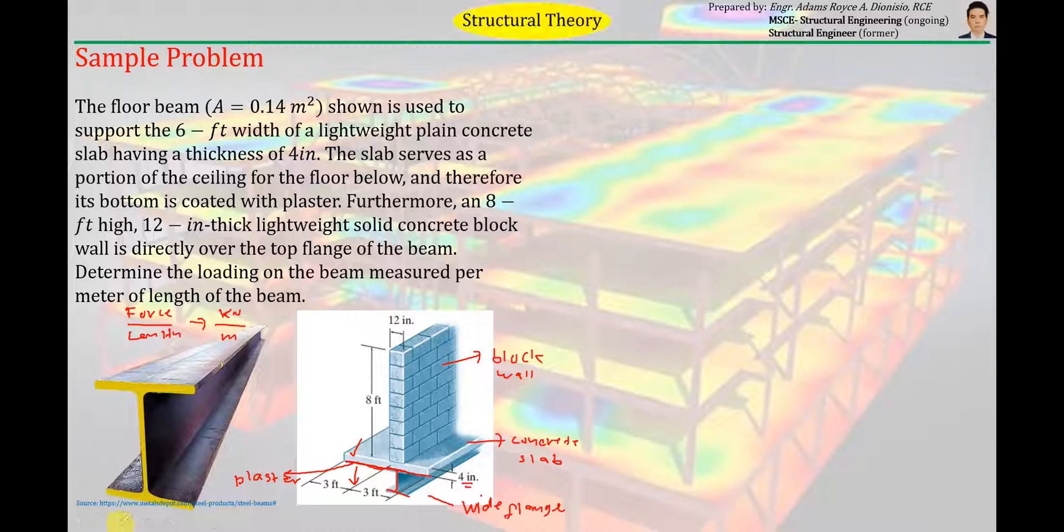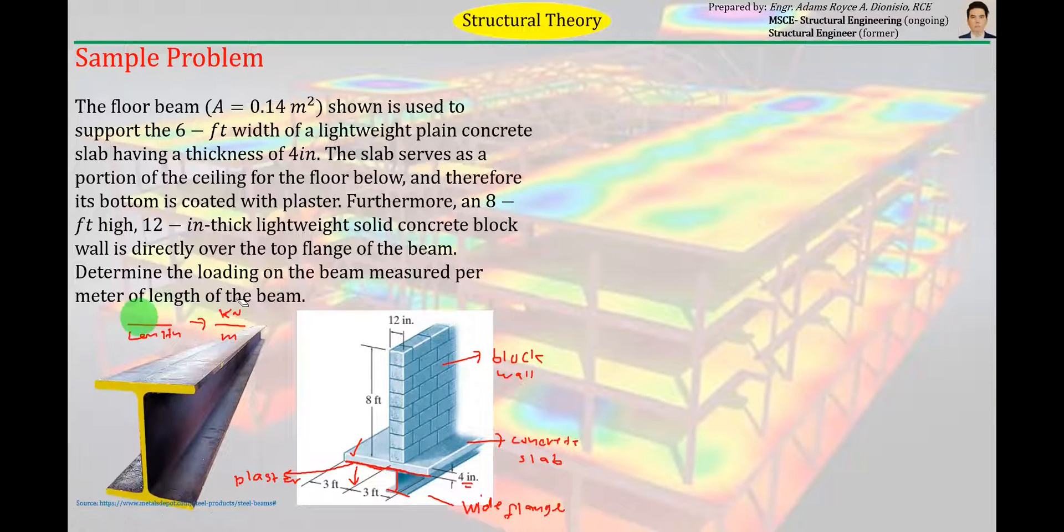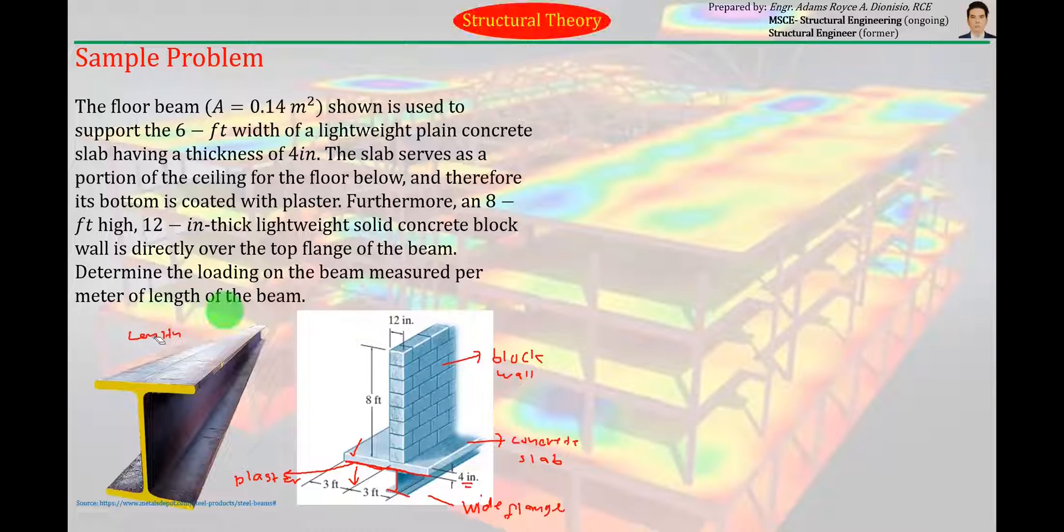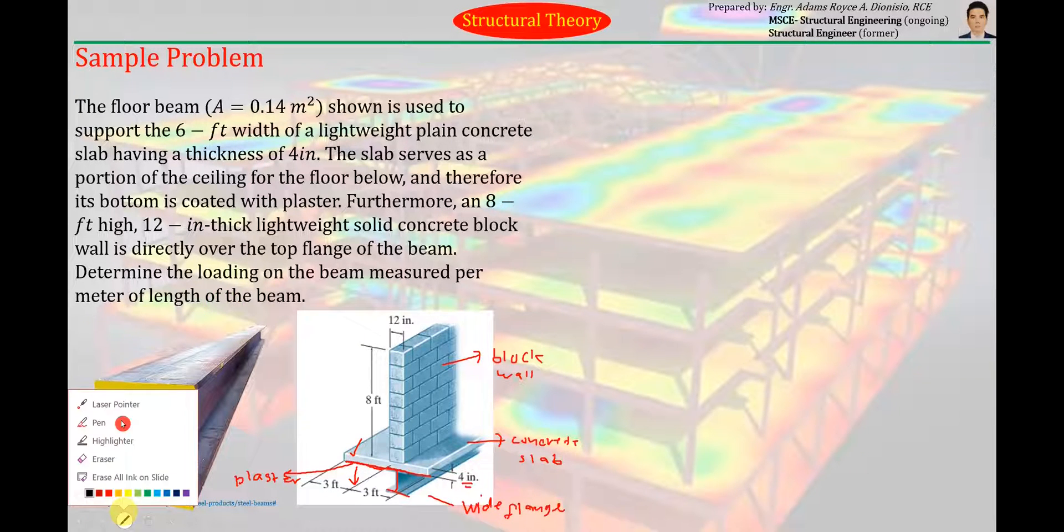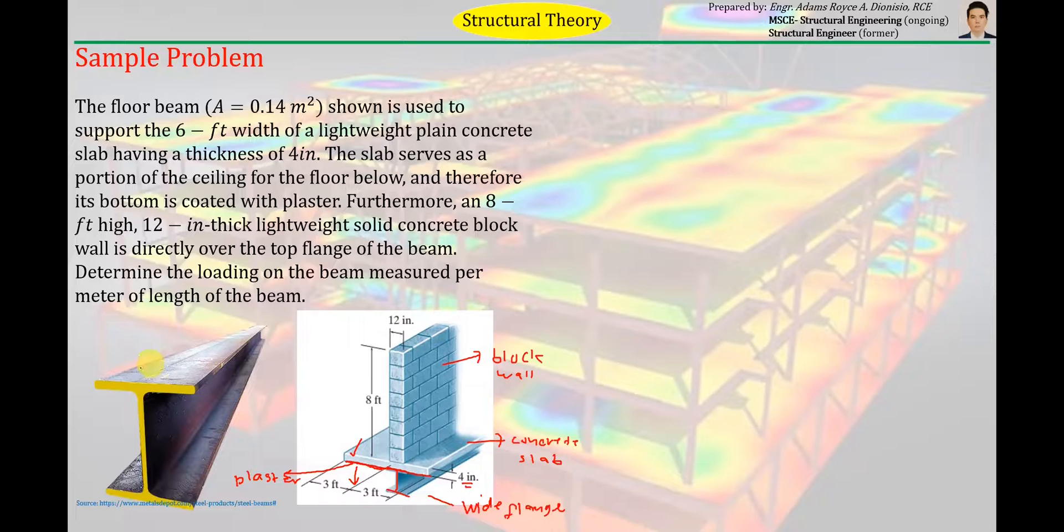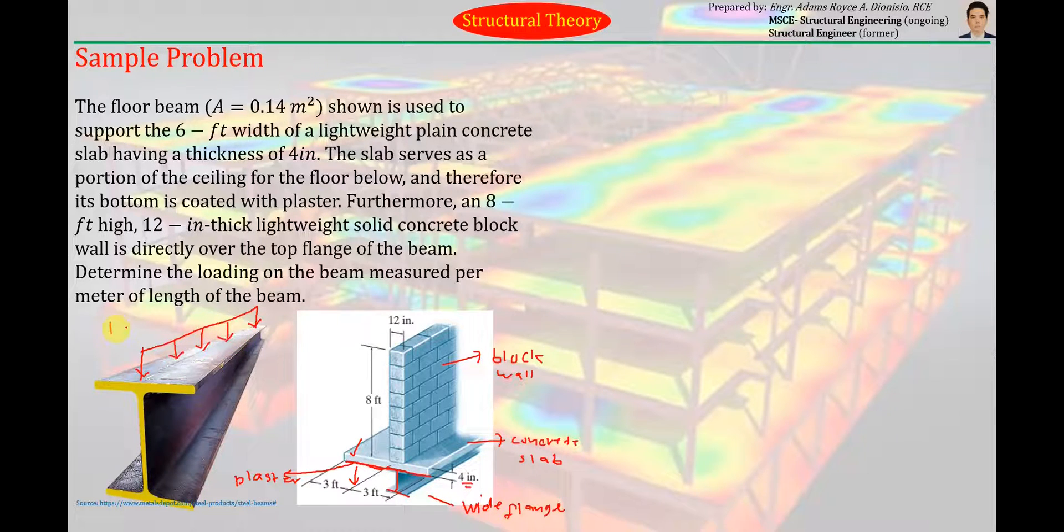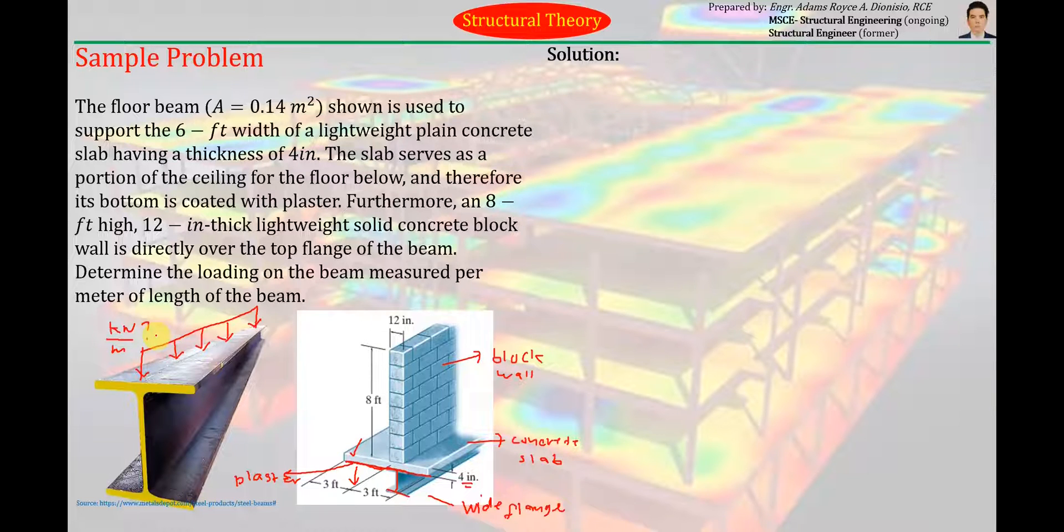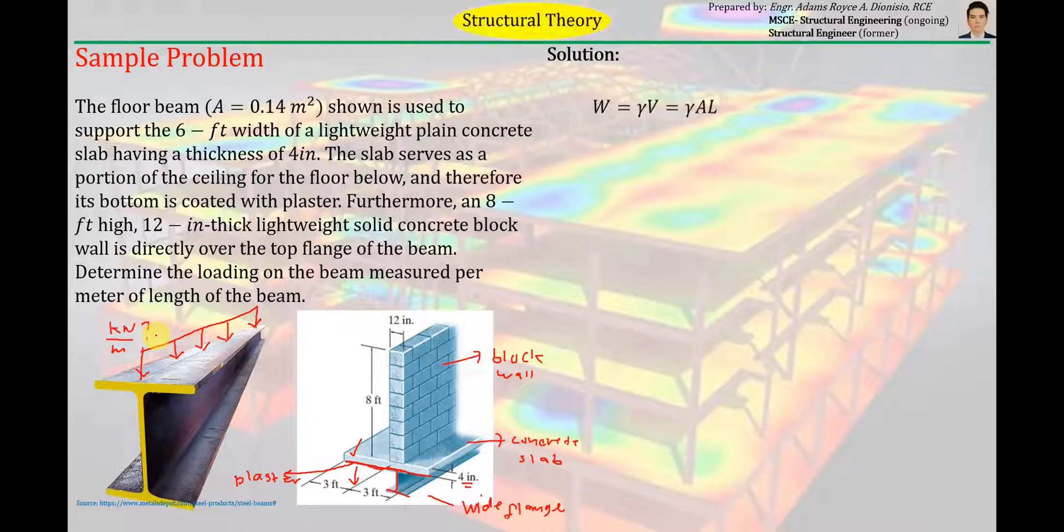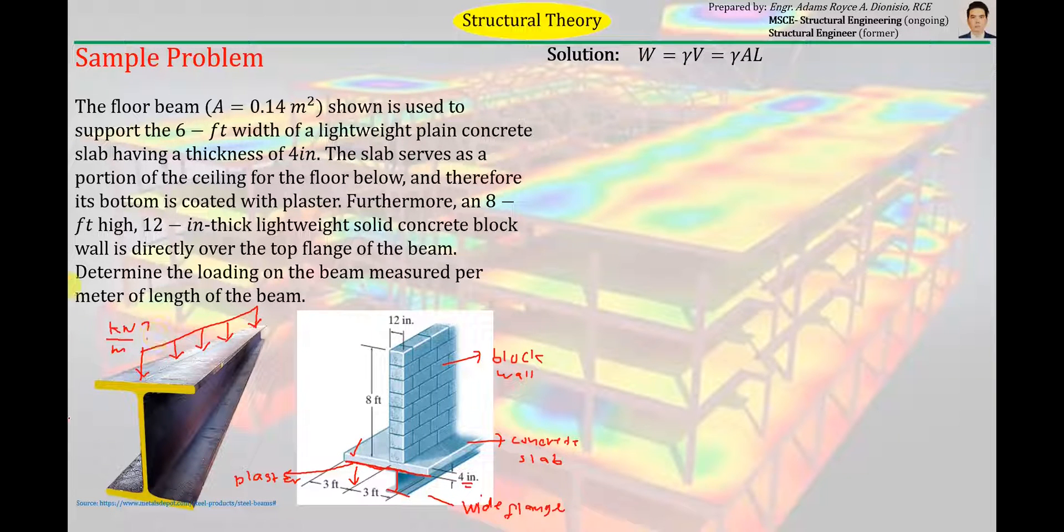So ito yung floor beam. Ganyan yung tura ng floor beam na hinahanap natin. And then, ito yung pinaka hinahanap sa tanong. Itong uniformly distributed load na ito. Ayan. Ayan yung pinaka hinahanap na load. Floor beam. We need to find that loading. That is in terms of kilonewton per meter. So how can we find that? How can we find that loading? So we can use the simple formula that we have mentioned a while ago.